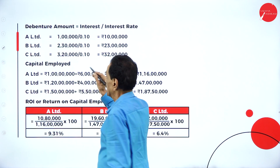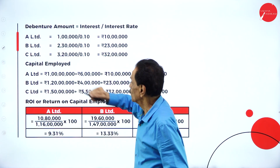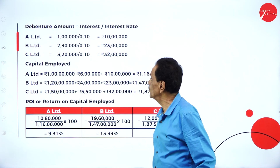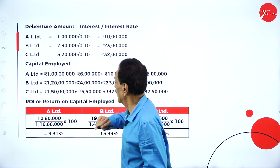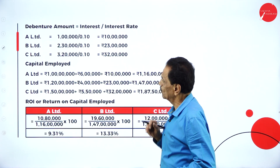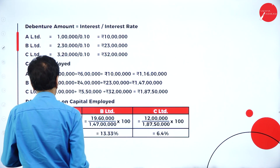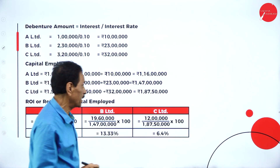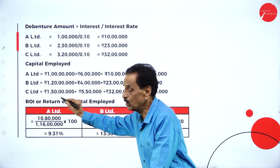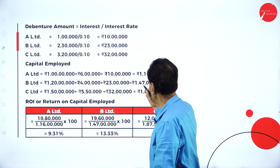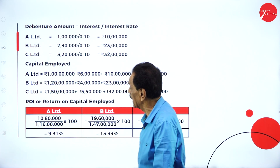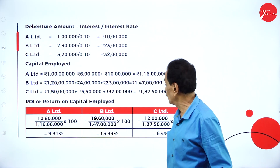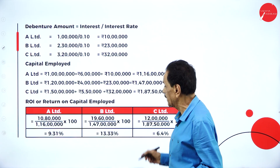Come back to debenture: rate of interest is 10%. So 1 lakh divided by 0.10 = 10 lakh (A); 2 lakh 30,000 divided by 0.10 = 23 lakh (B); 3 lakh 20,000 divided by 0.10 = 32 lakh (C). Total capital employed: A Limited = 1 crore 16 lakh; B Limited = 1 crore 20 lakh + 4 lakh + 23 lakh = 1 crore 47 lakh; C Limited = 1 crore 50 lakh + 5 lakh 50,000 + 32 lakh = 1 crore 87 lakh 50,000.